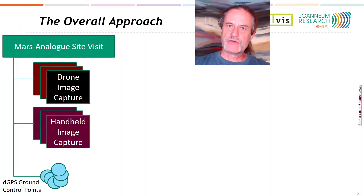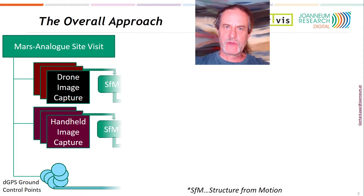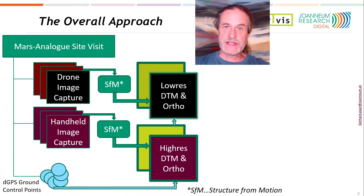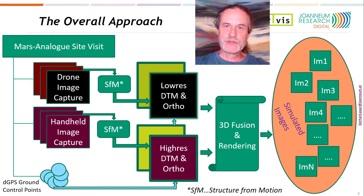Here is the overall approach to gain such high-fidelity ground truth based on real datasets. We capture images at different levels of detail — in this specific case using drones for the aerial, more global scale, and handheld directly on the sites to be simulated. In addition, ground control points are captured that shall be visible in the images. Structure from motion is then used to generate at least two differently scaled and sized 3D textured models. These models are fed into a rendering software that is able to fuse them and perform controlled rendering of simulated images.